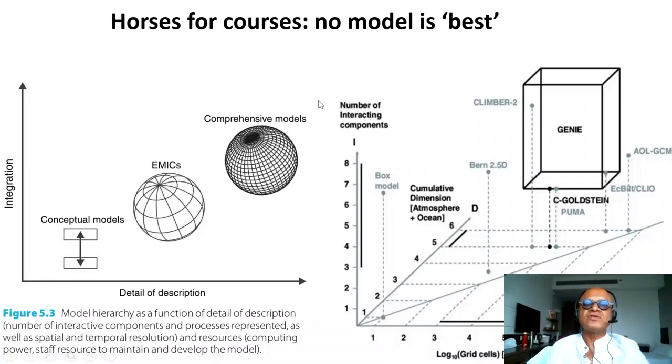Horses for courses: no model is best, as we already stated before. Depending on how much detail of description is involved and what kind of integration of the system is involved, you have simple conceptual models, what we call before as energy budget models. You have the earth system models of intermediate complexity, which can be run for a long time but they are very coarse resolution, typically, and simplified in many ways. And then we are talking about comprehensive models, models now being used for IPCC projections.